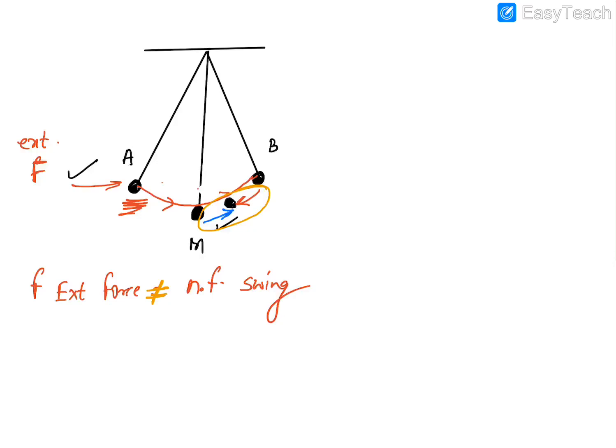Write the definition of resonance four to five times to memorize it. Now, there are certain experiments and give-reasons questions on resonance in the textbook. You may pause the video, read the textbook up to resonance, and then continue.